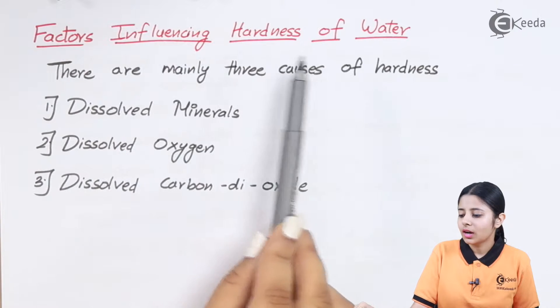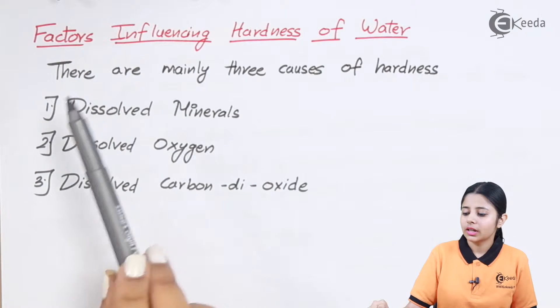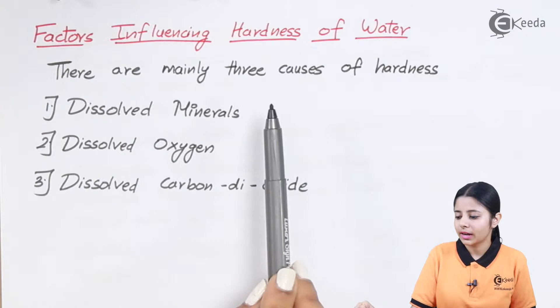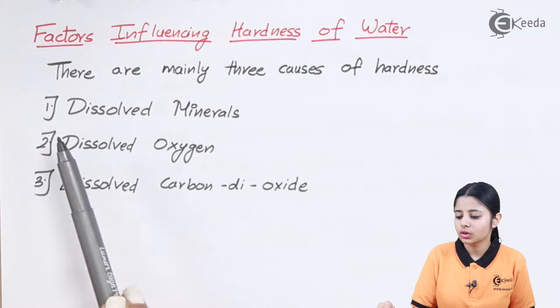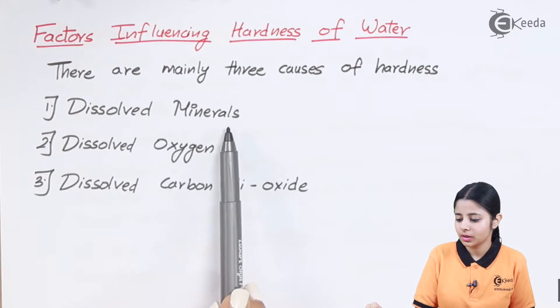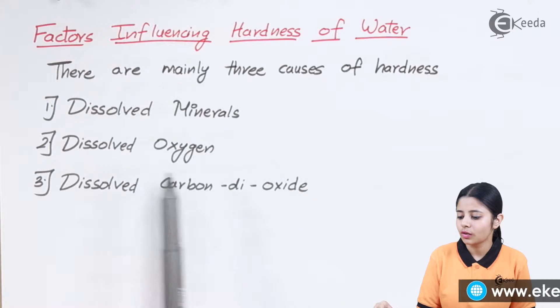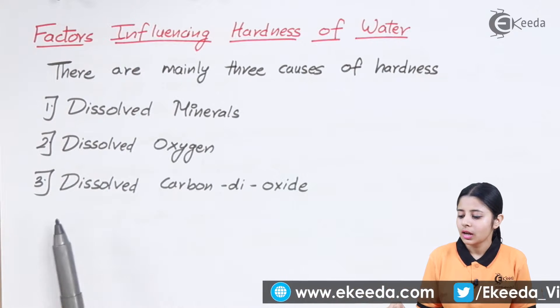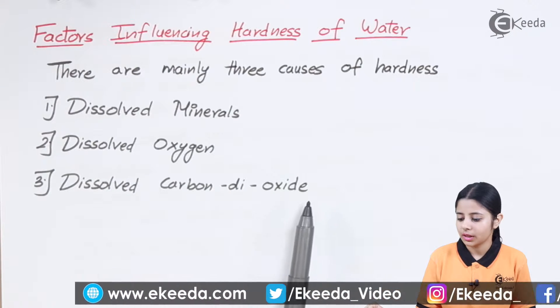Factors influencing hardness of water: there are three main factors — dissolved minerals, dissolved oxygen, and dissolved carbon dioxide.